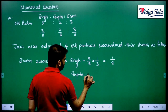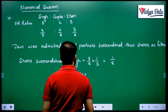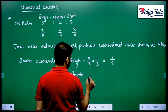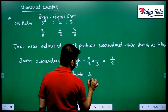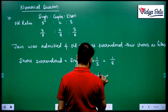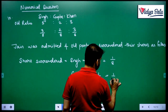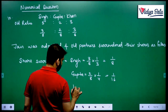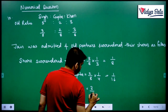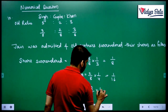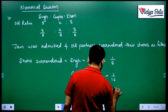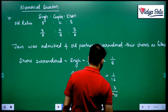Gupta is surrendering 1 fourth of his share. So 2 by 8 multiplied by 1 by 4 equals 1 by 16. And Khan is surrendering 1 by 5 of his share, which is 3 by 8 multiplied by 1 by 5, so 3 by 40. This is the share sacrificed.